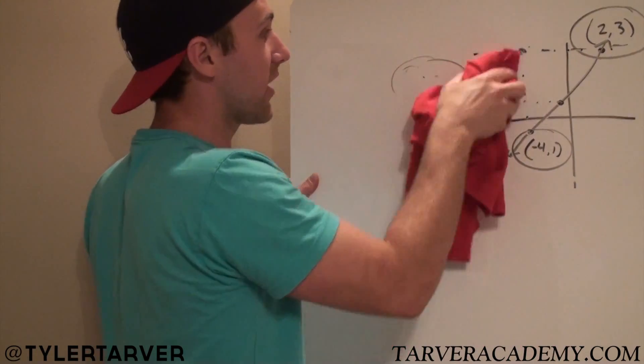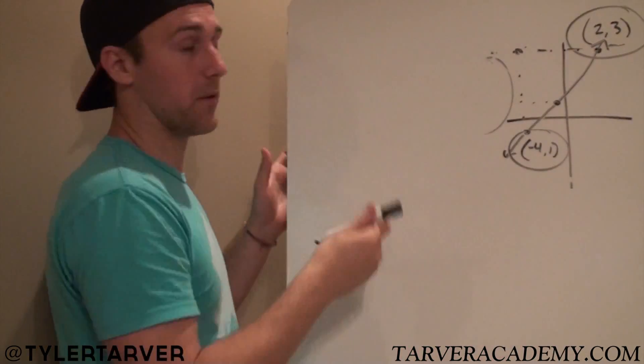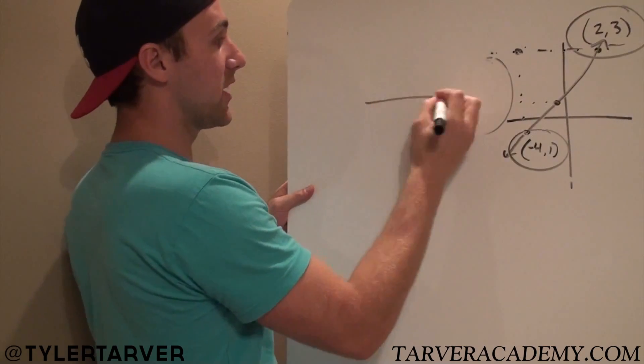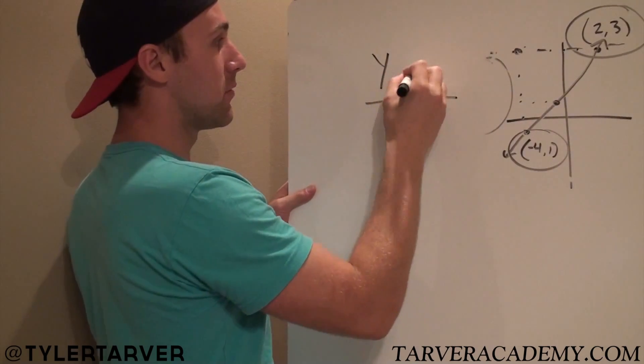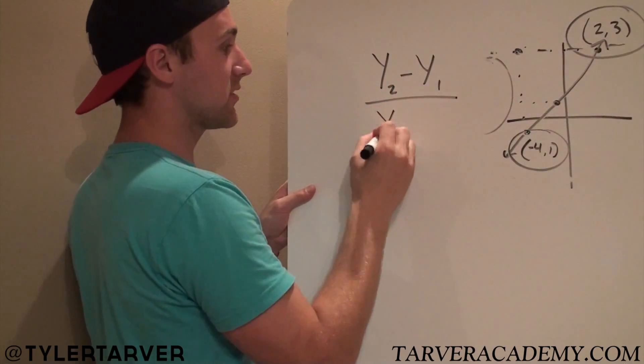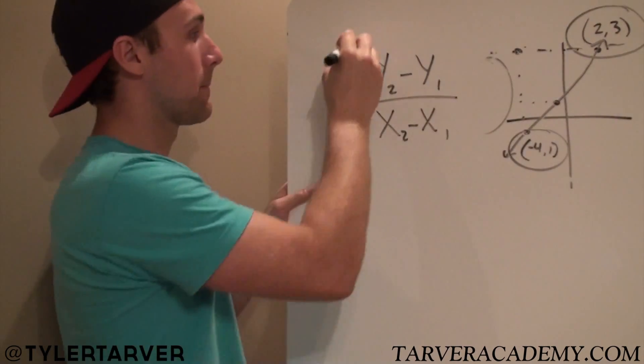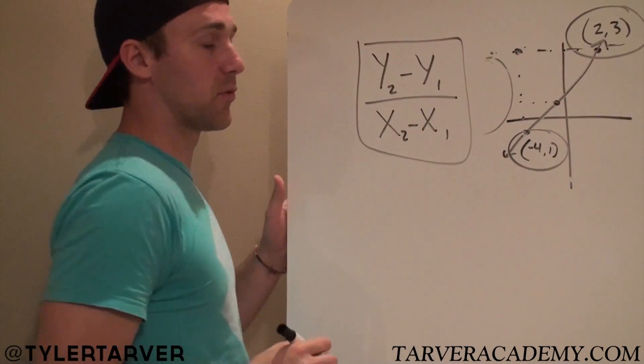Now we can use the same little guy. We'll use the same one. Slope formula is y2 minus y1 over x2 minus x1. Slope formula.